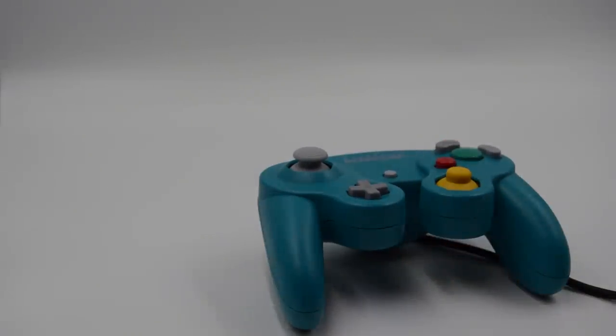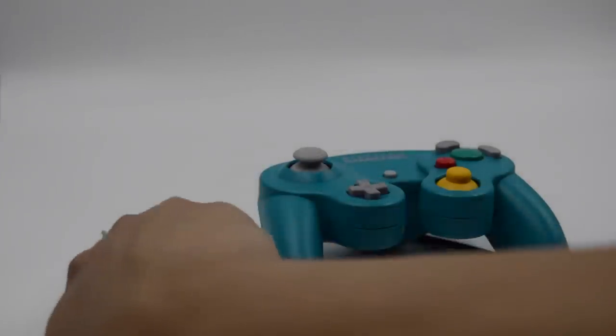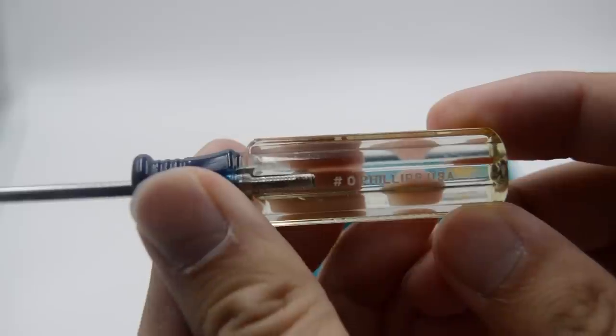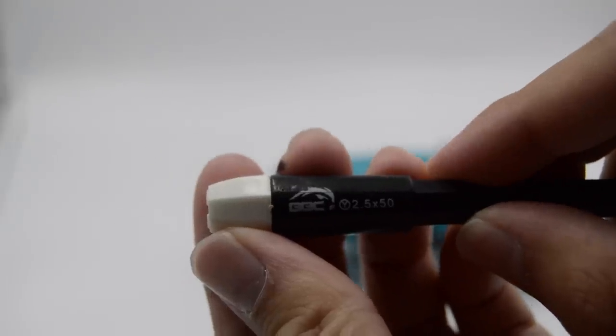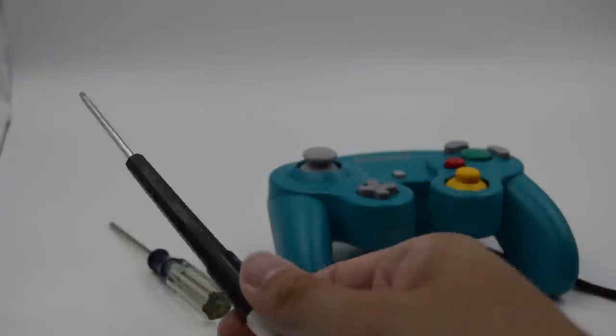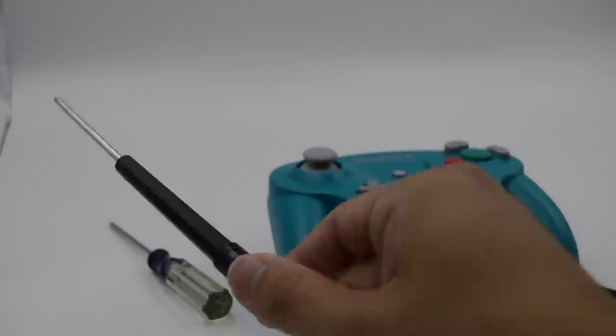I'm going to start off by saying something I've said every single time I've opened up a controller on this channel. The two tools you'll need to do just about anything you want to the controller are these two screwdrivers: this Phillips head screwdriver and this tri-wing screwdriver. Both can be found online for extremely cheap.